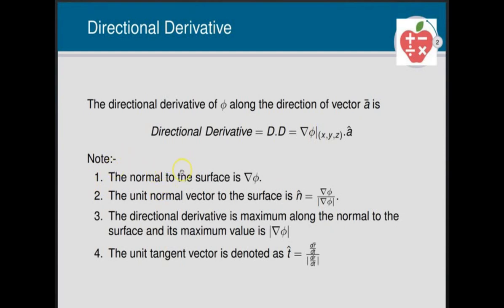Now, important points to remember: The normal to the surface is always grad φ. The unit normal vector to the surface is n̂, equal to gradient of φ divided by the magnitude of grad φ. The directional derivative is maximum along the normal, and its maximum value is the magnitude of del φ. The unit tangent vector t̂ is dr/dt divided by the magnitude of dr/dt.